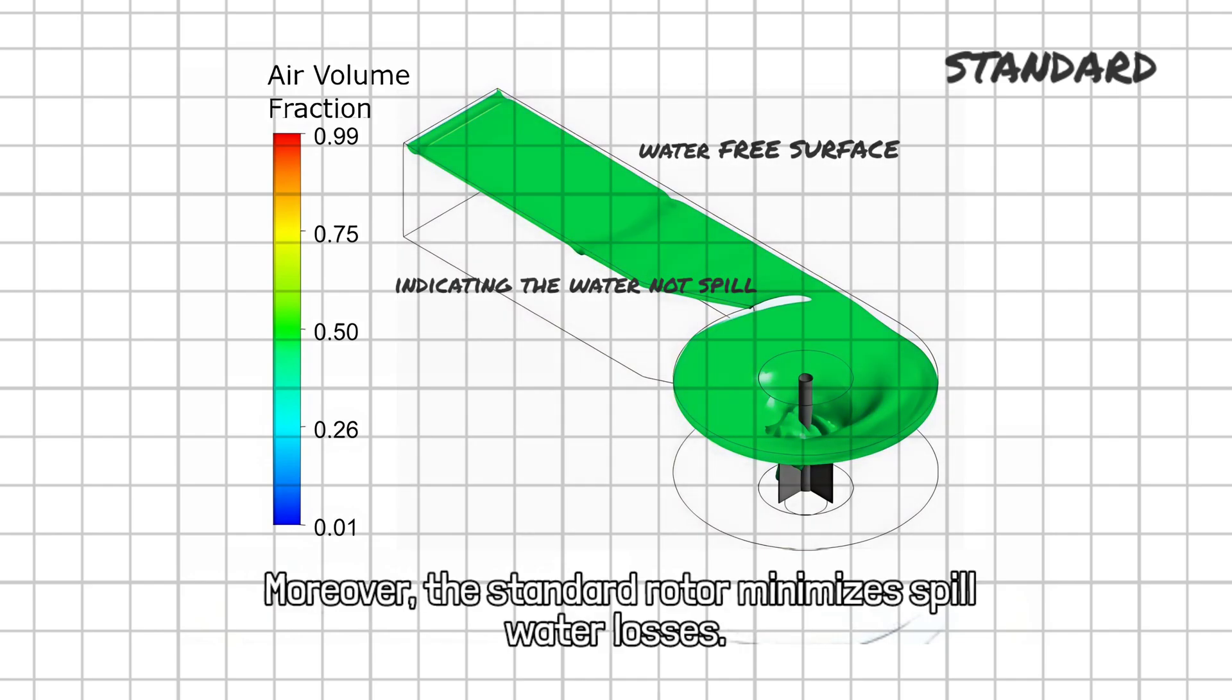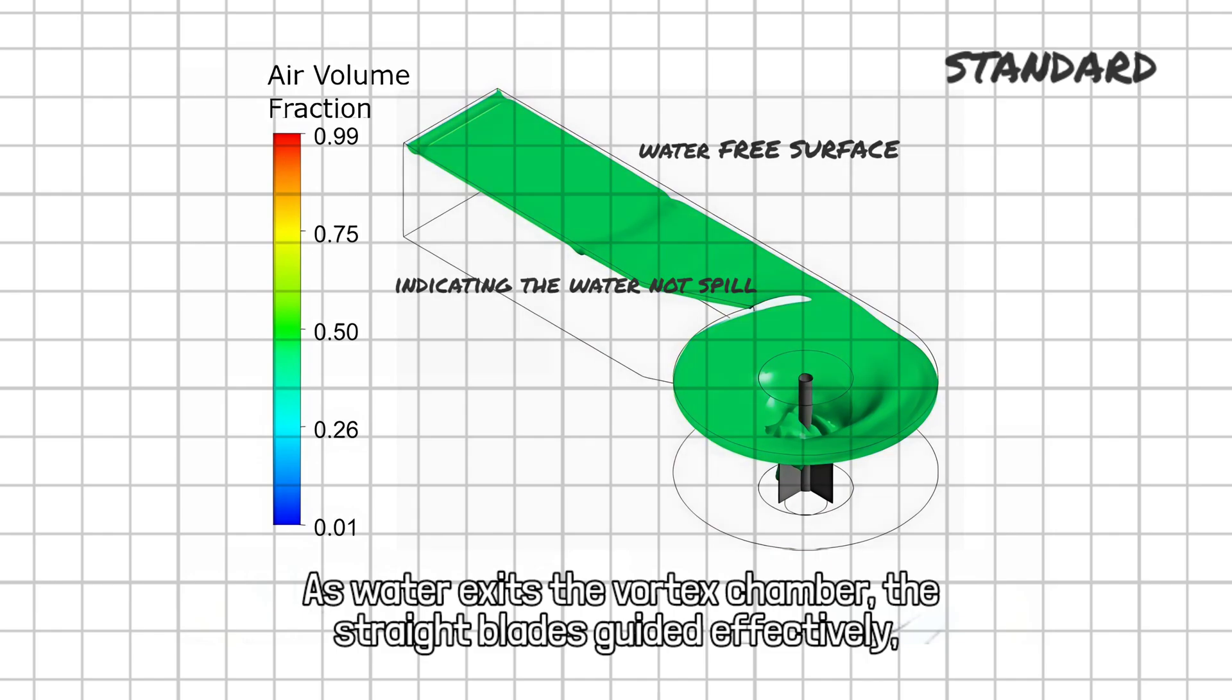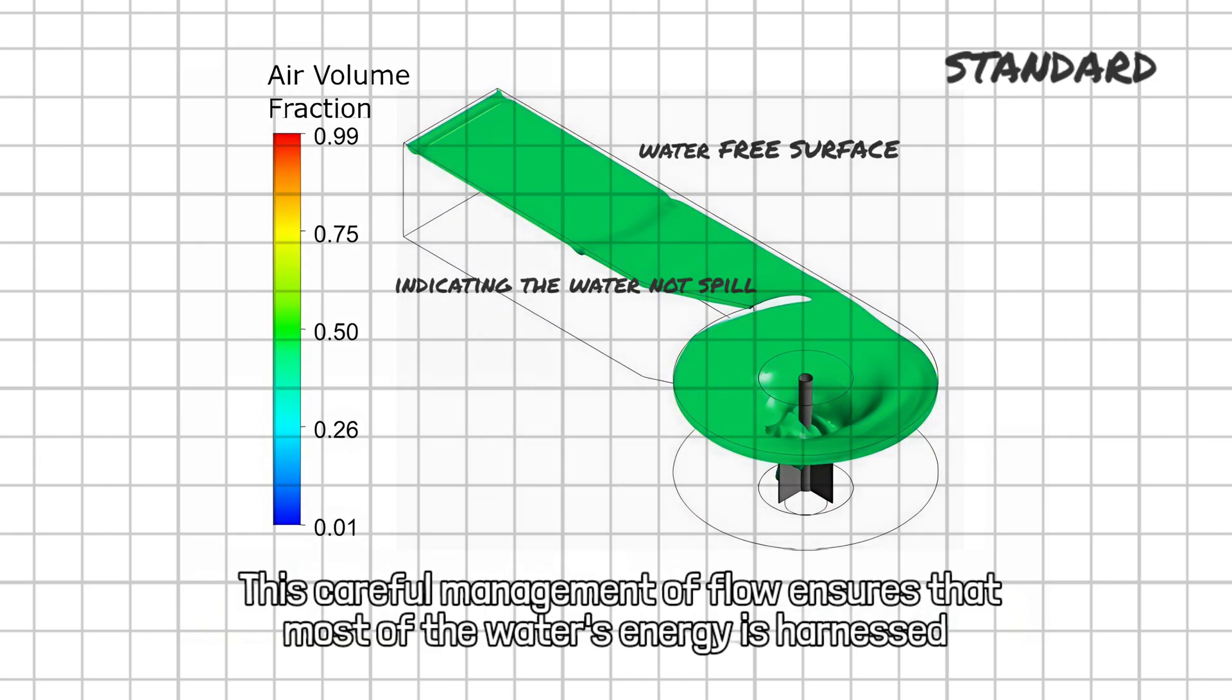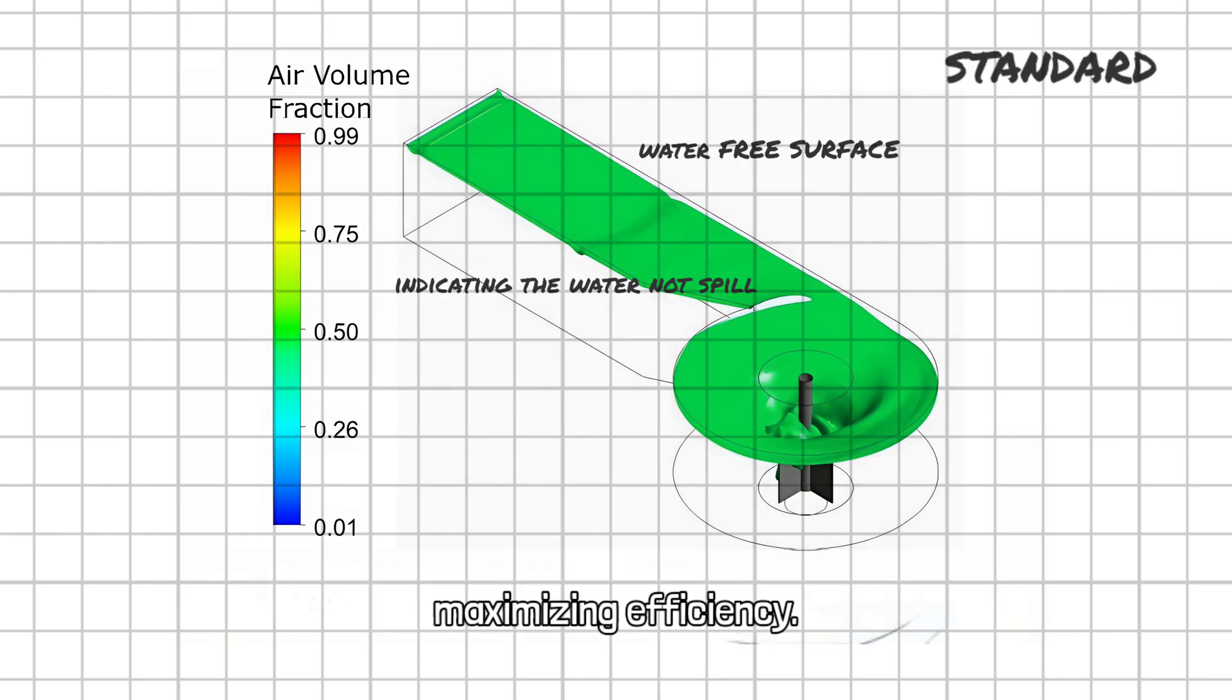Moreover, the standard rotor minimizes spill water losses. As water exits the vortex chamber, the straight blades guide it effectively, reducing the amount of water that escapes without contributing to power generation. This careful management of flow ensures that most of the water's energy is harnessed, maximizing efficiency.